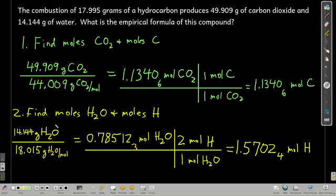Same thing for water, find moles of water and moles of hydrogen. So we take the grams of water and divide by the molar mass of water and that gives us moles of H2O. But there are two moles of hydrogen in one mole of water so we have to multiply that by two to get our moles of hydrogen.